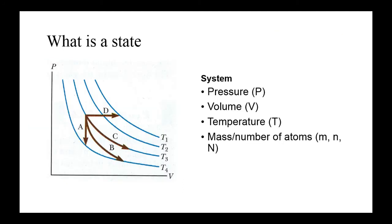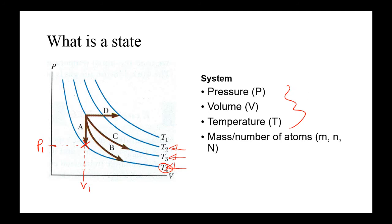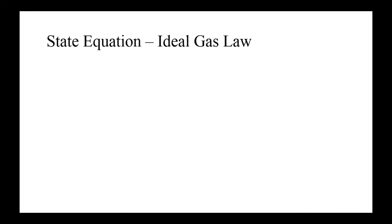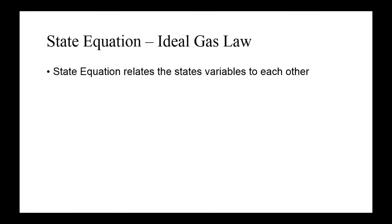Here's an example of a PV diagram with certain temperatures plotted. So if you have a certain volume and a certain pressure, then that state is indicated by a point on the diagram, and it has a temperature equal to whatever T4 is. These variables — P, V, and T — are our state variables. So the next part is: in equation form, how do we relate pressure, volume, and temperature? That's what's known as a state equation. A state equation relates the state variables to one another.